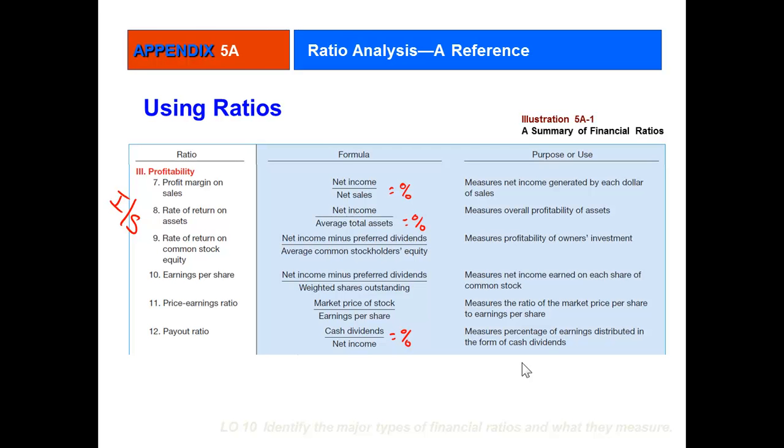Profitability ratios have everything to do with the income statement. We get percentages here. The profit margin ratio compares the bottom line of the income statement with the top line to get a percentage. You can also do rate of return on assets, which looks at net income over average total assets to see how well you're using your assets to generate profits.